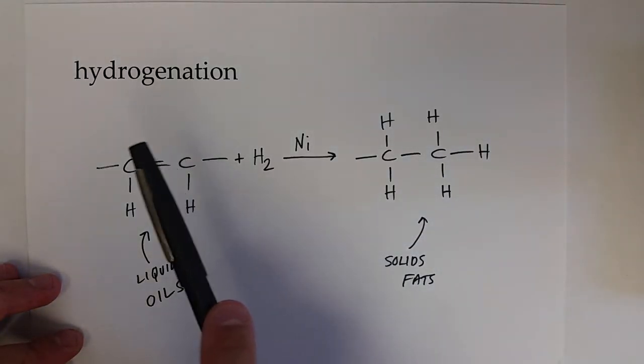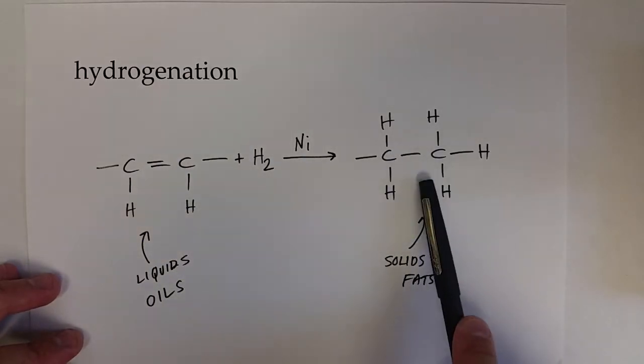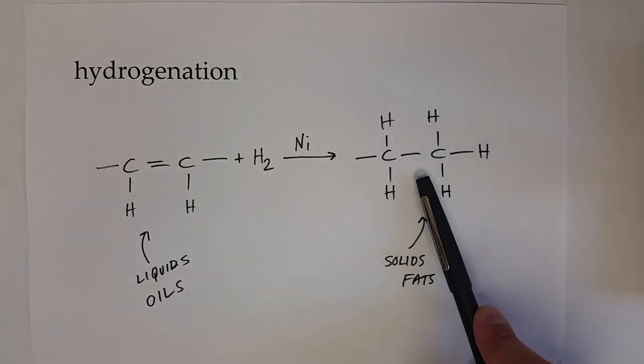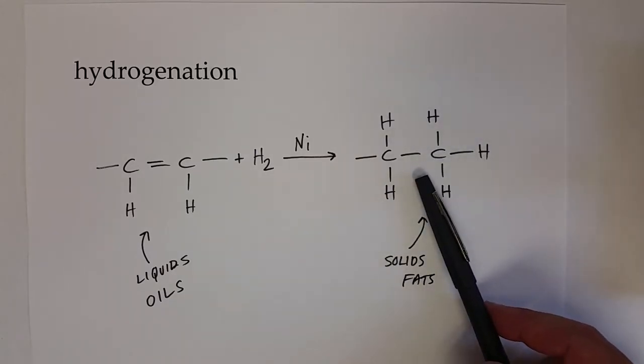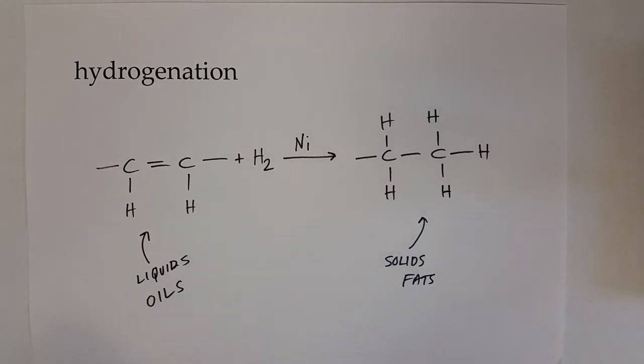Like margarine or shortening to be used for food. And of course that has the convenience of being a solid at room temperature. But it also, since it comes from a plant, we're making a solid fatty acid or fat without all the cholesterol that might come with making a fat from animal fatty acids.